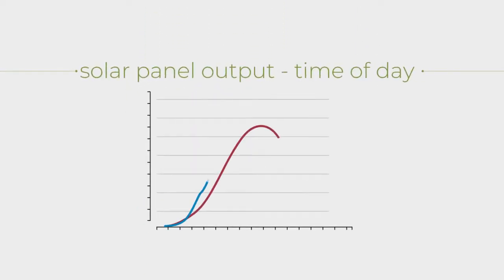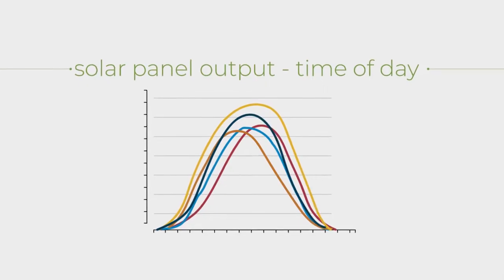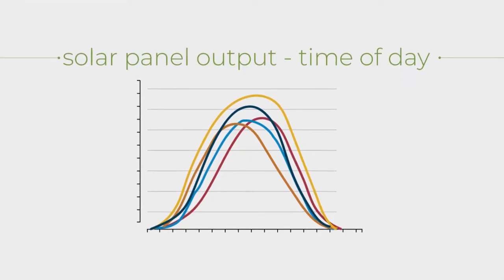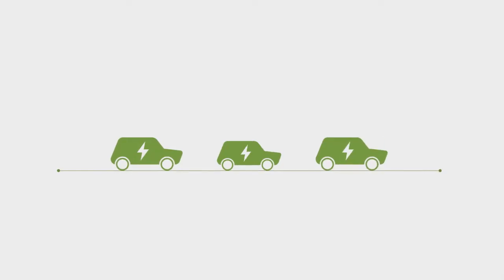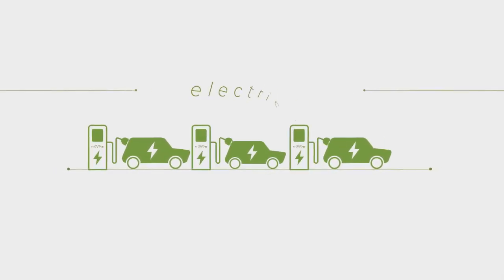To solve for the irregular nature of renewable energy, we need to store it so we can use it whenever we need. One solution comes from an unexpected source – electric vehicles.